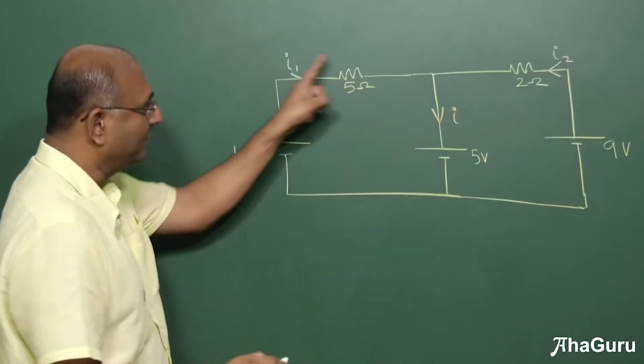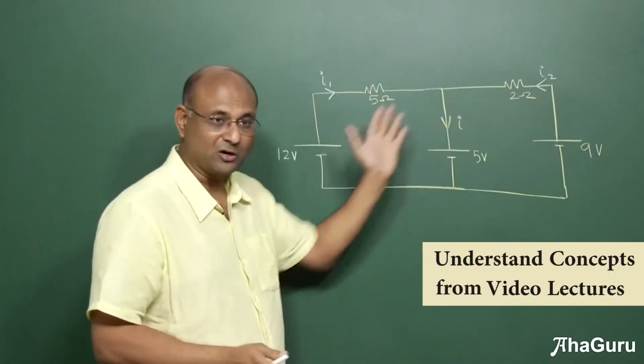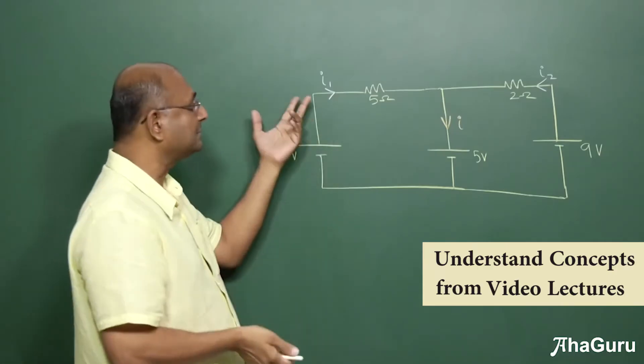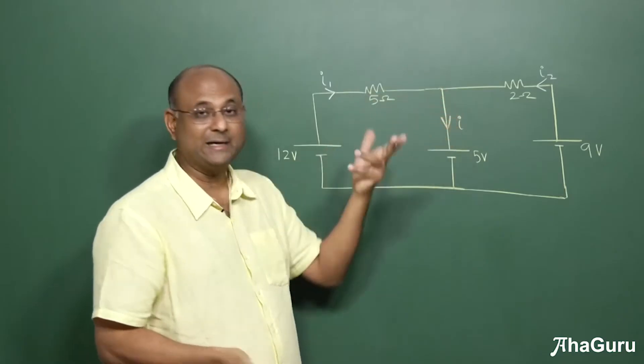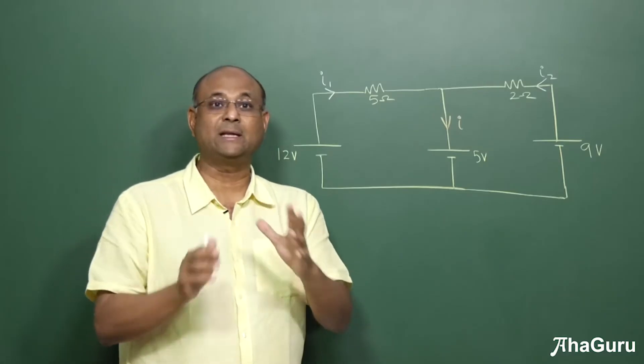And then writing an equation for this loop and writing an equation for that loop. We call this Kirchhoff's voltage law, loop laws. And if we solve it, we have two simultaneous equations. We'll find I1 and I2, and then we can add it up to find I. That's really long, because if you did that, it's going to take you easily 3 to 4 minutes.